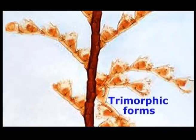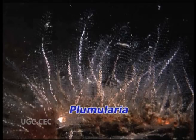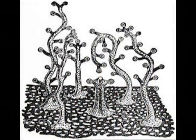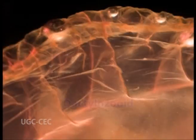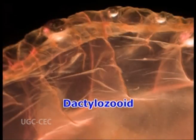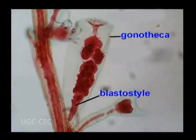Trimorphic forms. In some forms like Plumularia, besides gastrozoids and gonozooids, a third type of individual or zooid known as dactylozooid is observed. Its function is defensive. The gonozooids or blastostyles are often enclosed in a chitinous gonotheca.